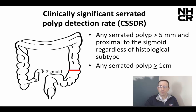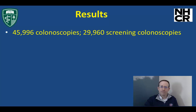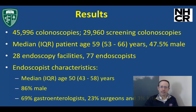Any polyp greater than 5 millimeters proximal to sigmoid, or any serrated polyp greater than a centimeter anywhere. Although a little bit more difficult to calculate, these would reflect the serrated polyps that may have malignant potential — i.e., the sessile serrated adenoma/polyps. We looked at nearly 50,000 colonoscopies, of which 30,000 were screening, median age 59, 47.5% male participants, 28 endoscopy facilities, and 77 endoscopists.